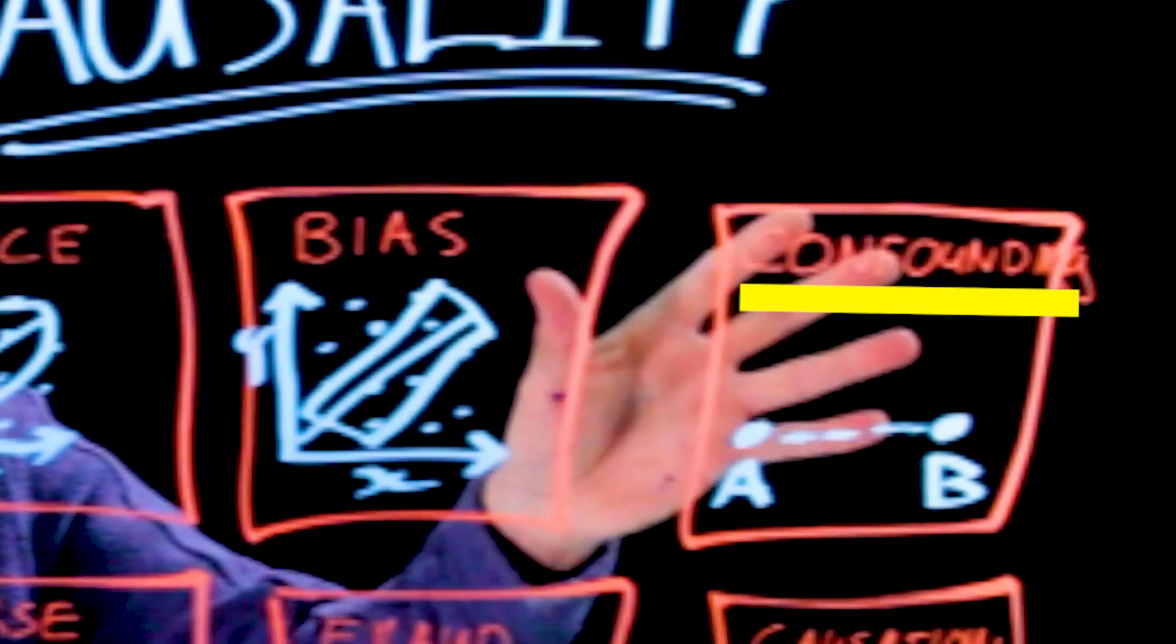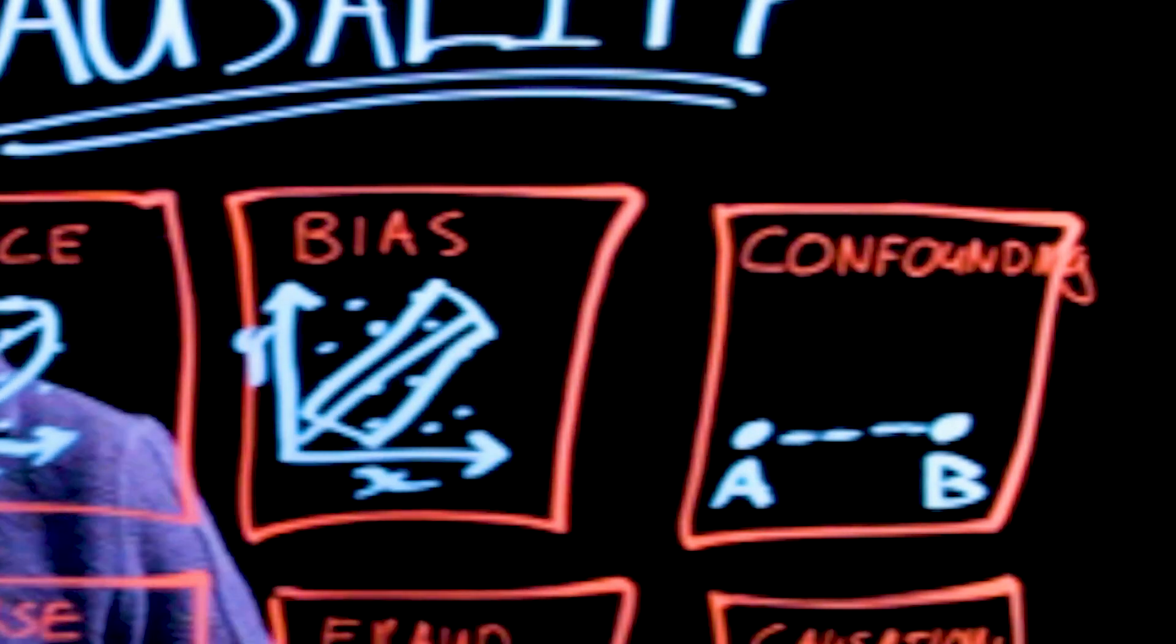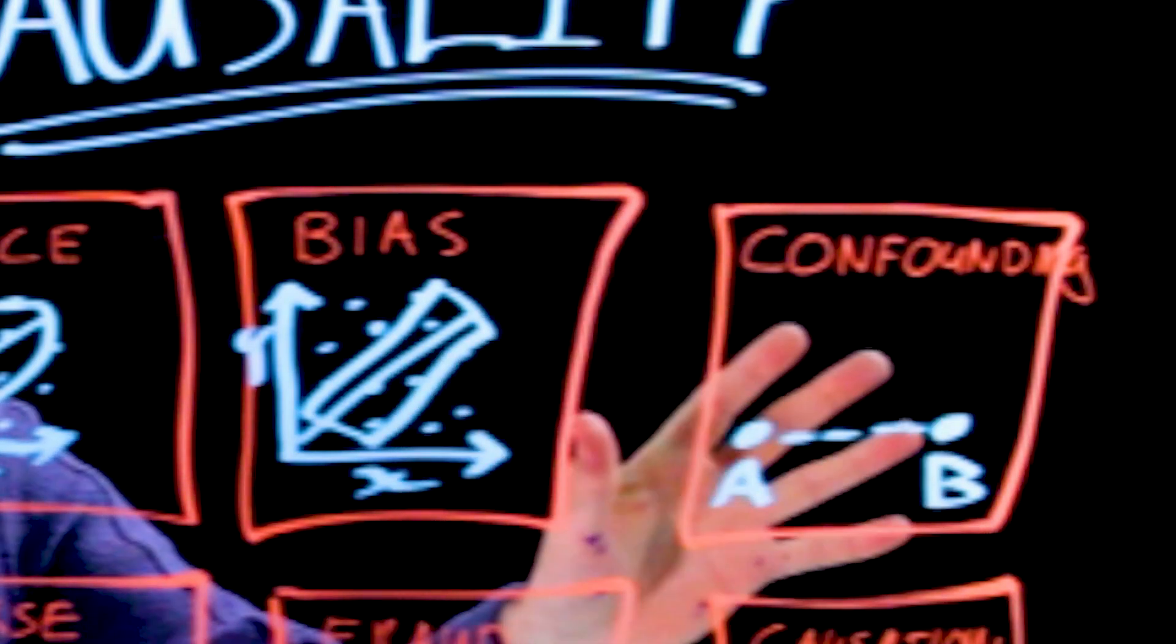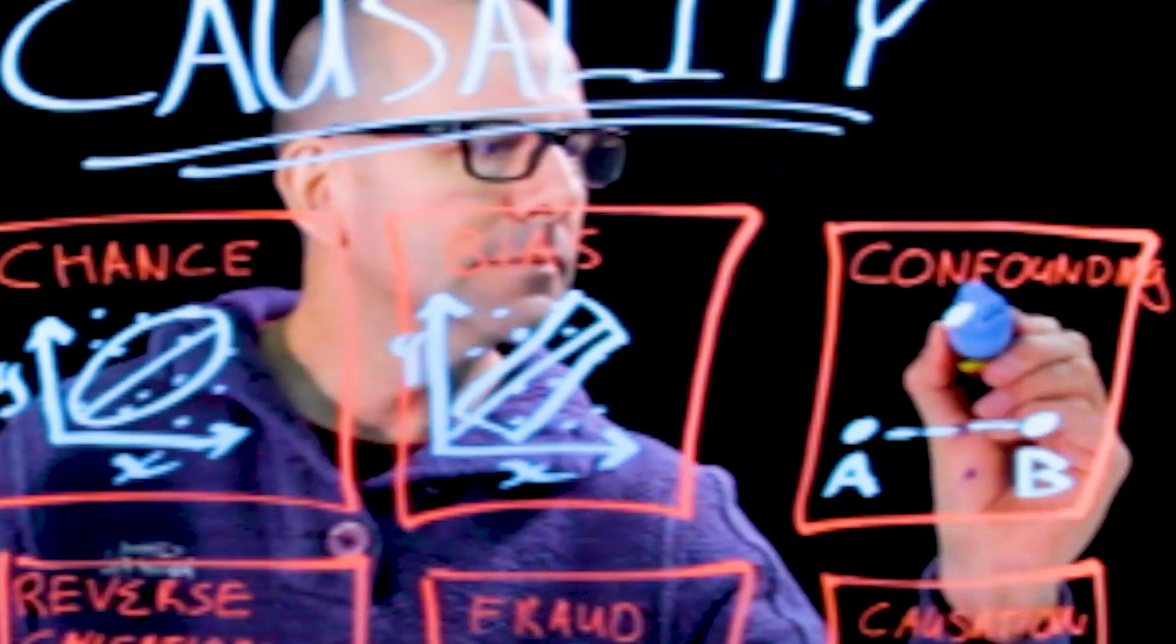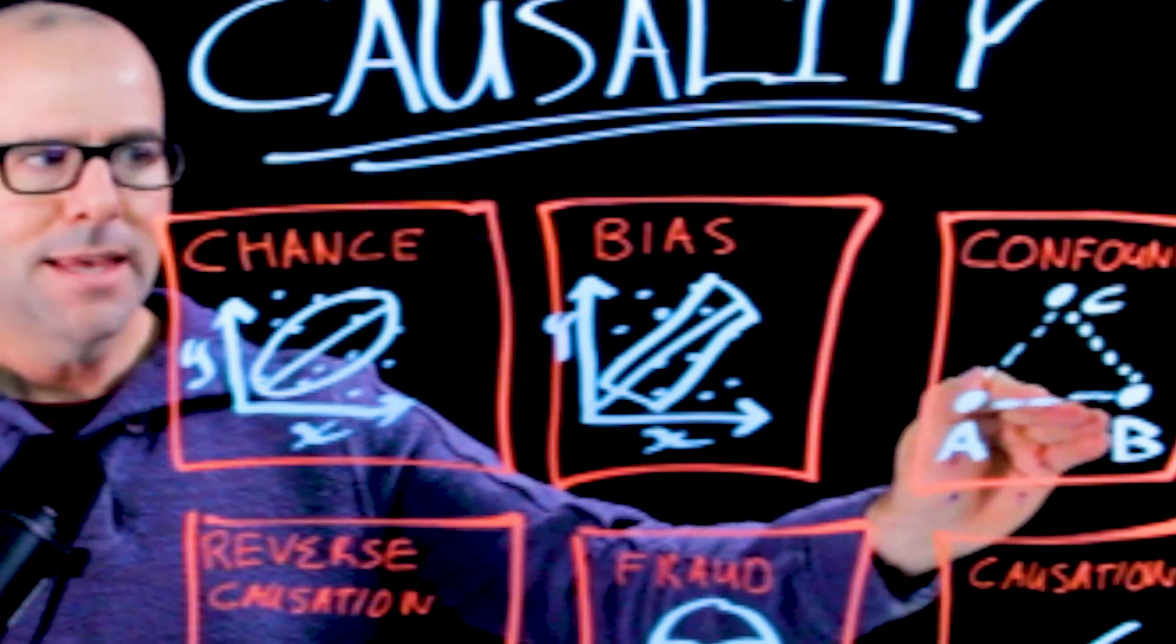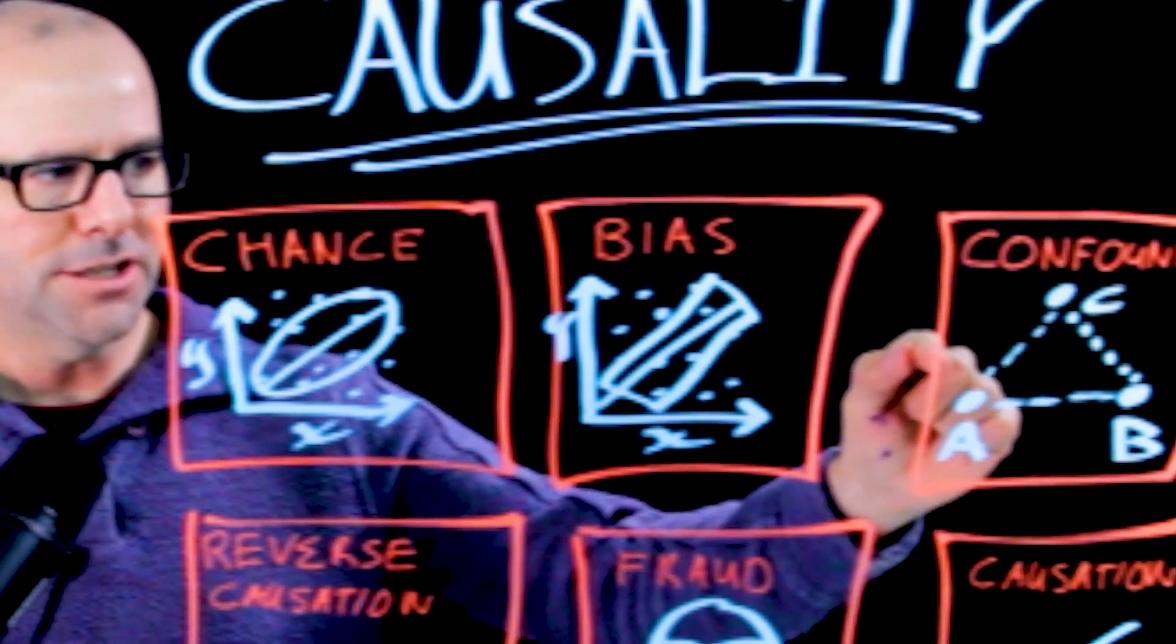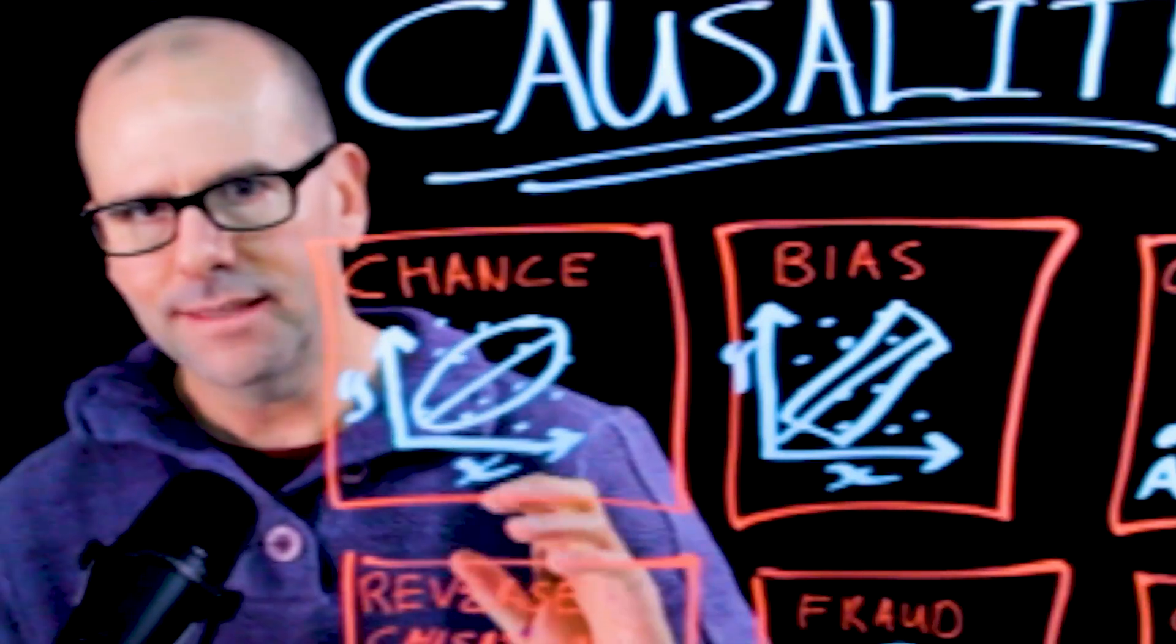Confounding, people often call confounding an example of bias. It's not really. It's a slightly different thing. With respect to confounding, really what we've got is we've got a relationship between A and B. It might seem causative, but in actual fact, both A and B are associated with C. C is not on the causal pathway between A and B. In actual fact, what seems to be A causing B is an actual factor relationship between A and B and C and B.